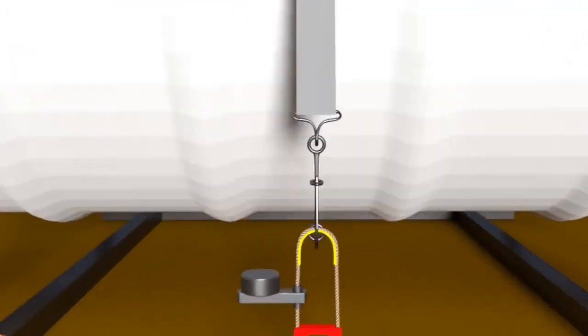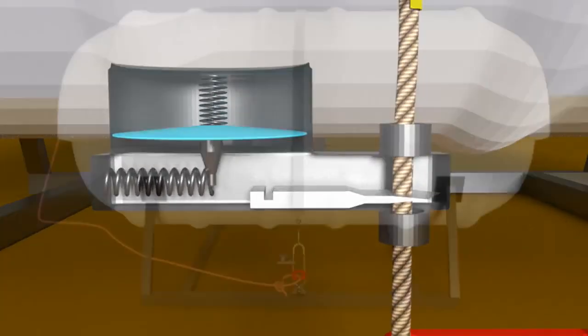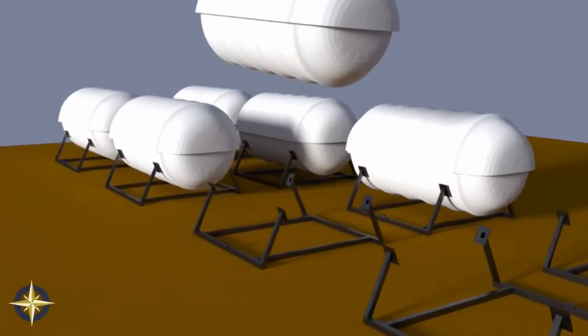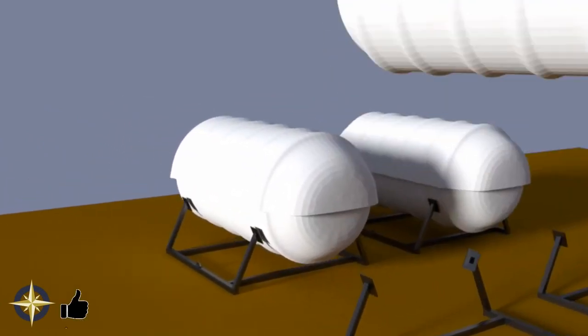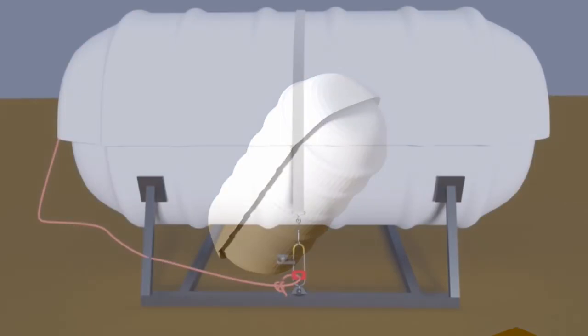They automatically cut your life raft free and trigger its inflation in the event that you're unable to launch it yourself. Even if you've already successfully abandoned ship into another raft, the remaining release units will release all your remaining life rafts, dramatically increasing your resources available for survival.